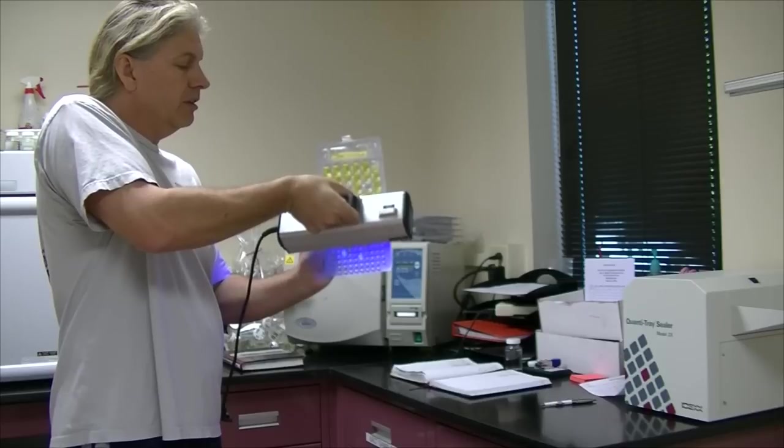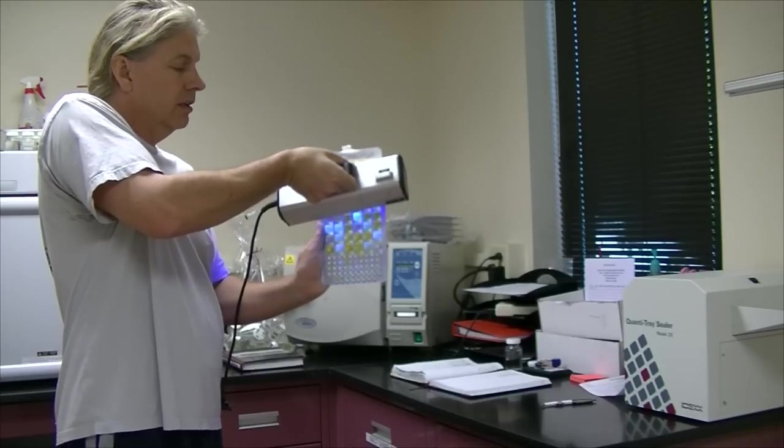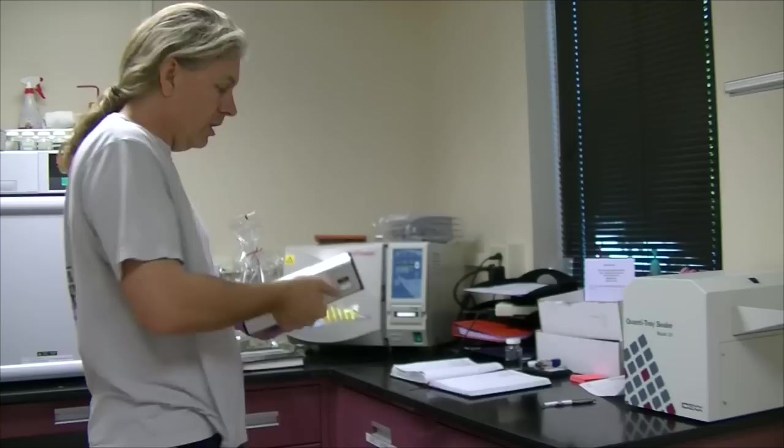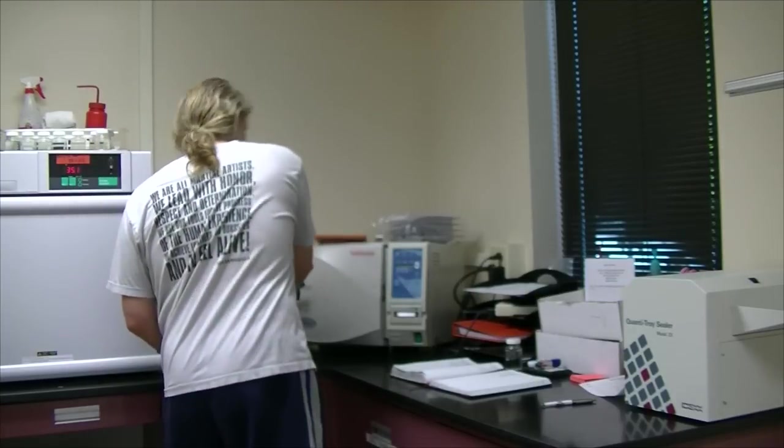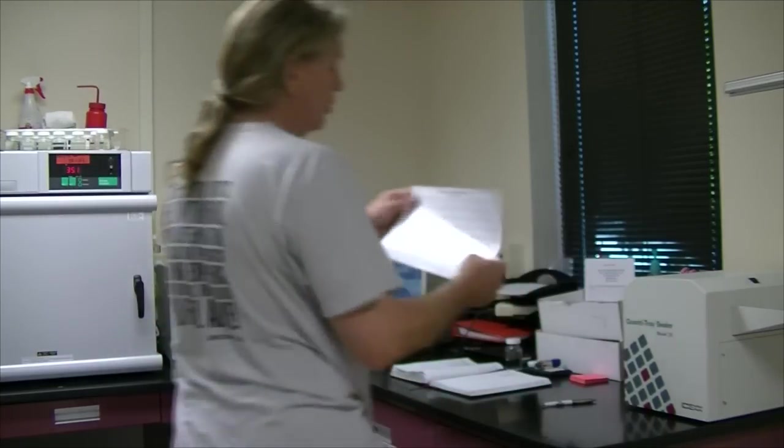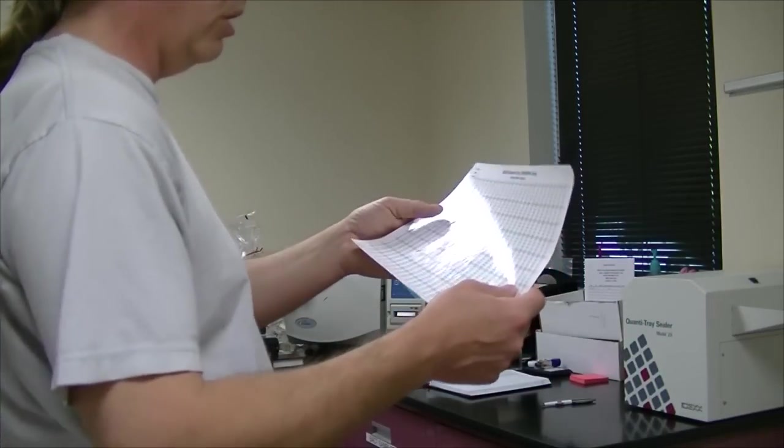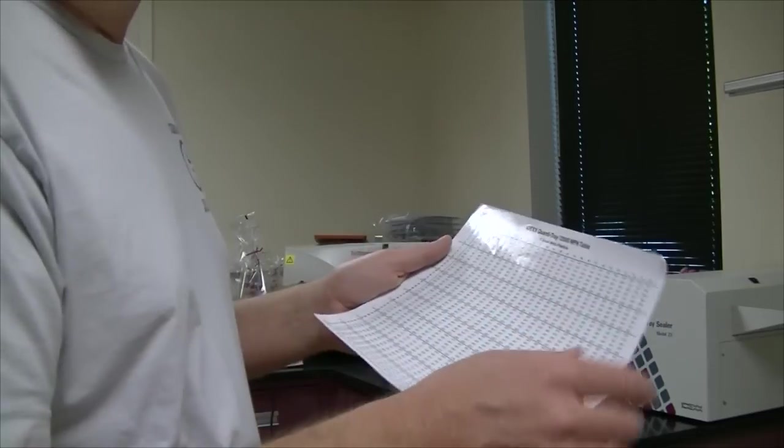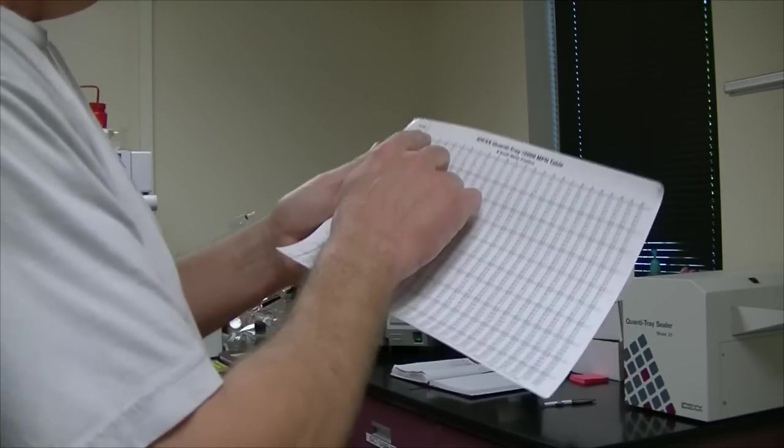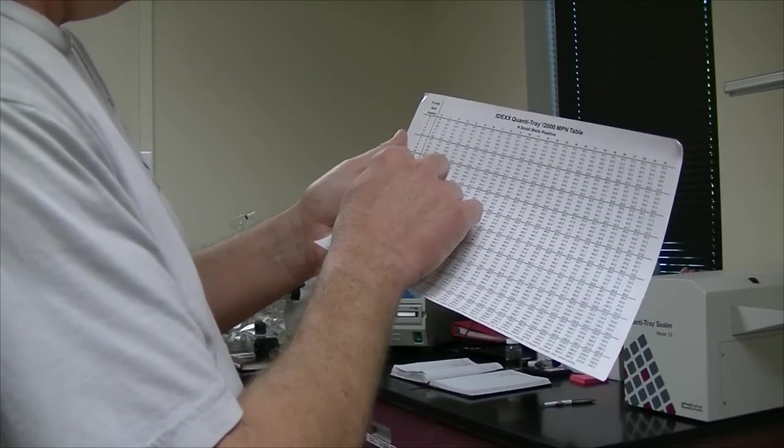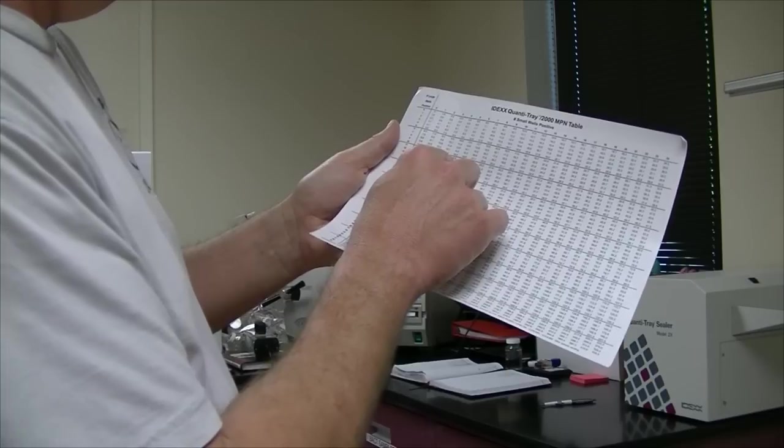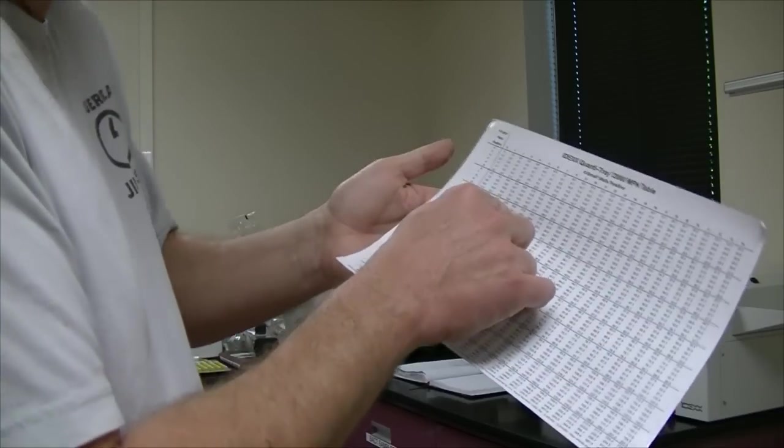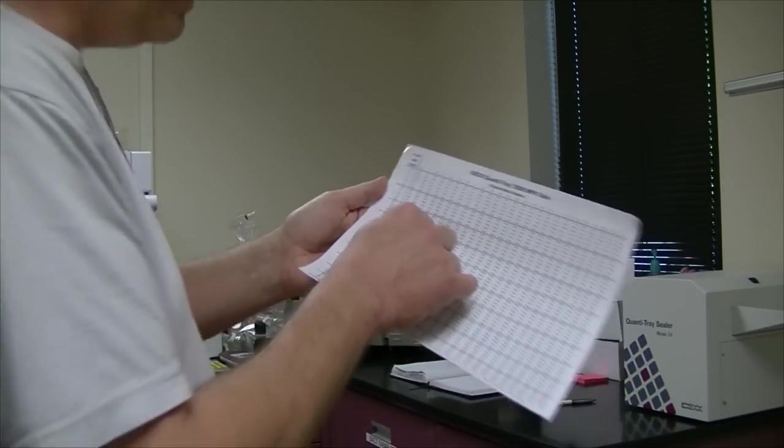So you do the same thing. You count the positives of E. coli in large and small. And you go back to the same chart. And you go right down. Let's say there were 12 large and 3 small. We already had written down our most probable number of the coliform. Now let's say we would go 12 and 4. The E. coli would be 18.1. I didn't exactly count that, I'm just guessing at it so you don't have to sit here and stare at me count twice.